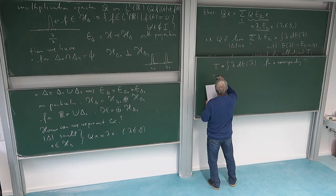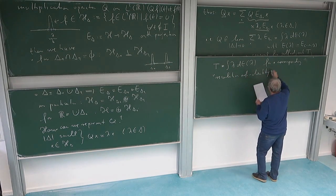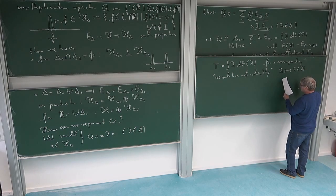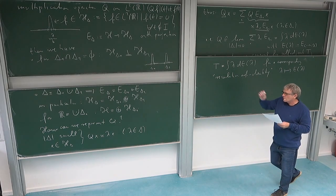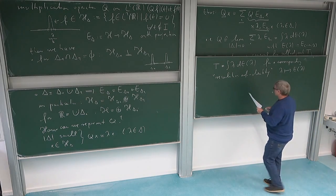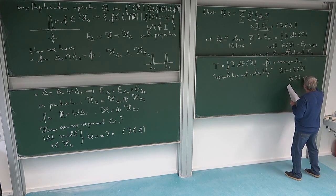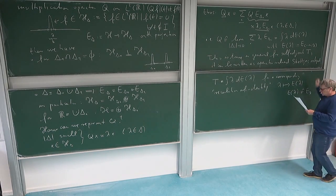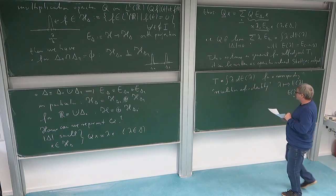Such a function E_lambda is usually called a resolution of the identity, or equivalently a projection-valued measure — it is the distribution function of a projection-valued measure. We need to understand that any self-adjoint unbounded operator T can be written in this integral form for a corresponding resolution of identity, a function mapping lambda to E_lambda with properties we still need to specify precisely in general.